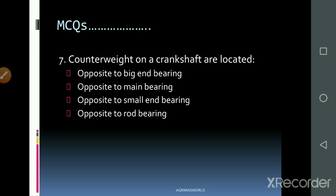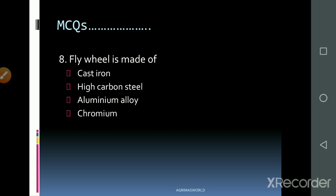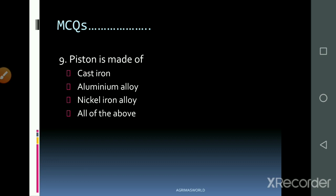Next question: The crankpin is located opposite to — big end bearing, main bearing, small end bearing, or rod bearing? The answer is opposite to big end bearing. Next: Flywheel is made up of — cast iron. Next: Piston is made up of — cast iron, aluminum alloy, nickel and iron alloy, or all of the above? The answer is all of the above.